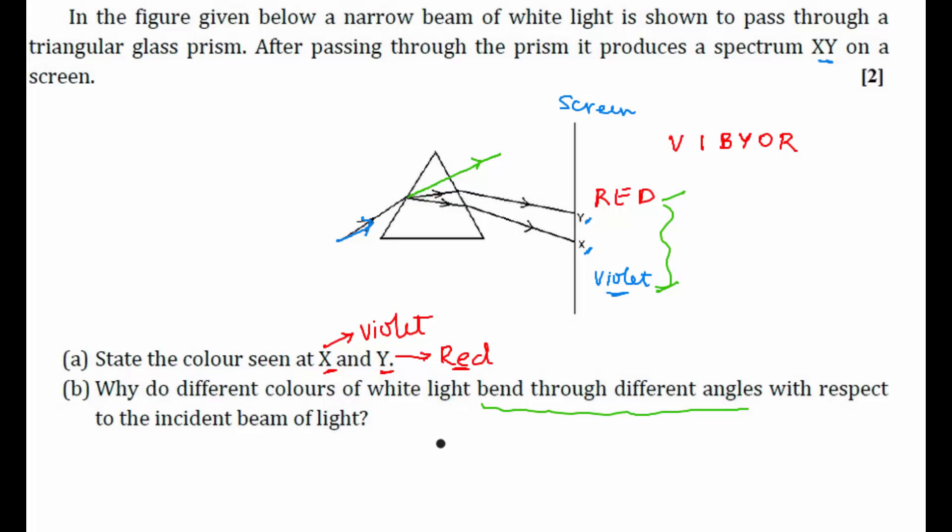Why different colors bend at different angles with respect to the incident beam of light? Because each color will be having different speeds in different medium. So when this white light enters this glass prism, the medium here is glass, which is denser medium. So speed inside the glass for red will be more compared to speed inside the glass for violet. Why? Because red has more wavelength compared to violet. So wavelength is more for red compared to violet. That's the main reason why different colors of light bend through different angles.